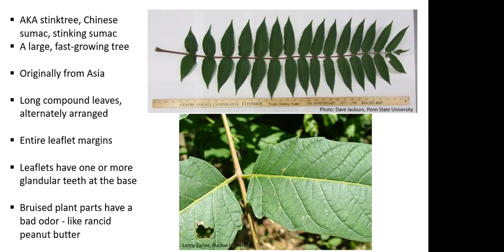It's originally from far Eastern Asia — China and also Korea — but was introduced to the United States and North America in the late 1700s on the East Coast. It's been here for a long time and was introduced as an ornamental species. The leaves, which are very long and compound, are alternately arranged on really stout stems. A good summer identification characteristic is that the leaflets have an entire margin — no serrations or teeth on the outside edge of the leaf — other than one or more small glandular teeth at the very base of the leaflet. All parts of the plant, when bruised or contacted, have a really disagreeable odor that's been described as smelling like rancid peanut butter.